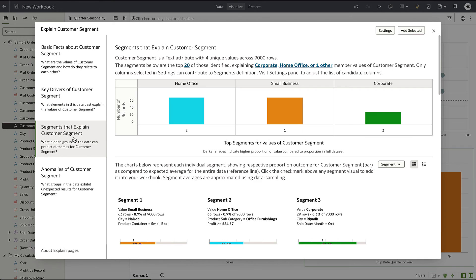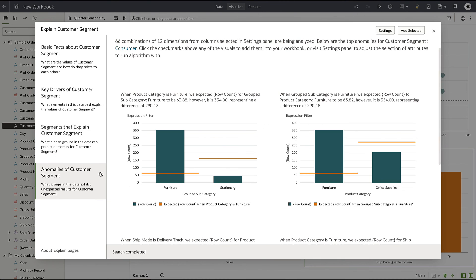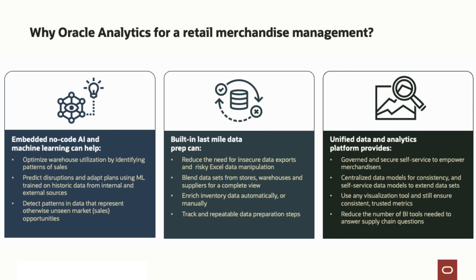When assessing your customer habits, historical performance data, and supply management data in Oracle Analytics, you can utilize the embedded, out-of-the-box, no-code machine learning capabilities to detect patterns in your data that represent the unseen market and sales opportunities. Maintaining your supply and order systems is more accessible with built-in last-mile data prep that automatically or manually enriches inventory data. These features combine to reduce BI tools needed to answer supply chain questions.